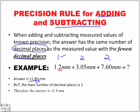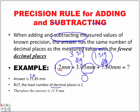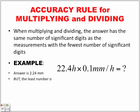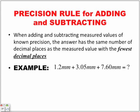So remember: when we are multiplying and dividing, we're looking at the least number of significant digits in our question for our answer. For adding and subtracting, our answer must have the same number of decimal places as the fewest number of decimal places in our question.